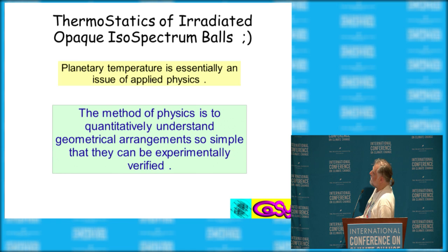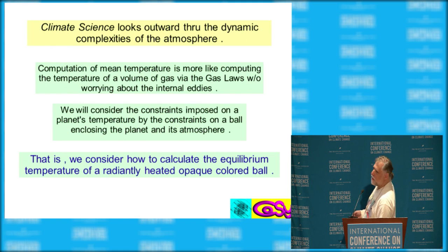Planetary temperature is essentially an issue of applied physics. The method of physics is to quantitatively understand geometric arrangements so simple they can be experimentally verified. And the one thing that can trump any politician in the world is an experiment.